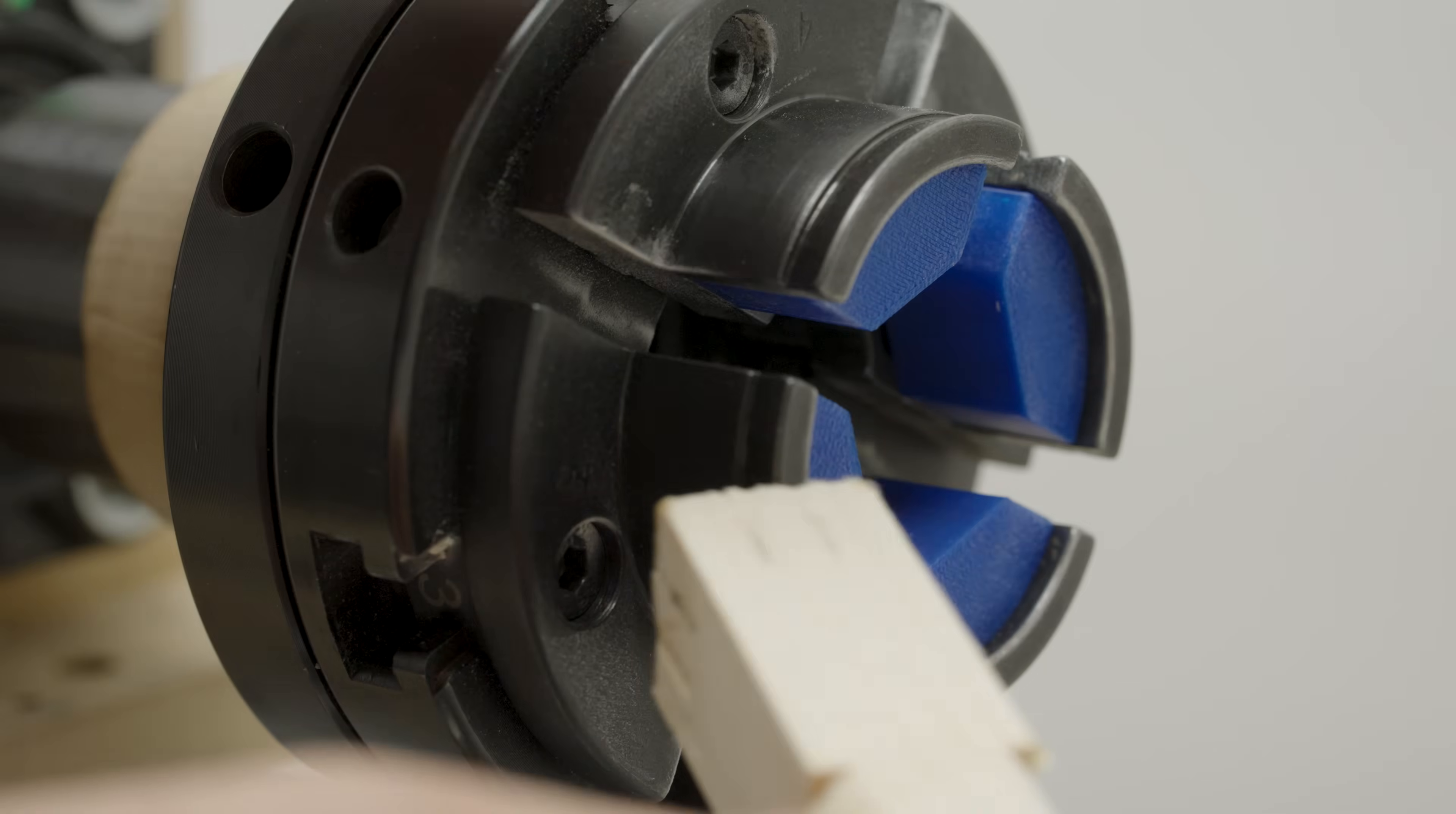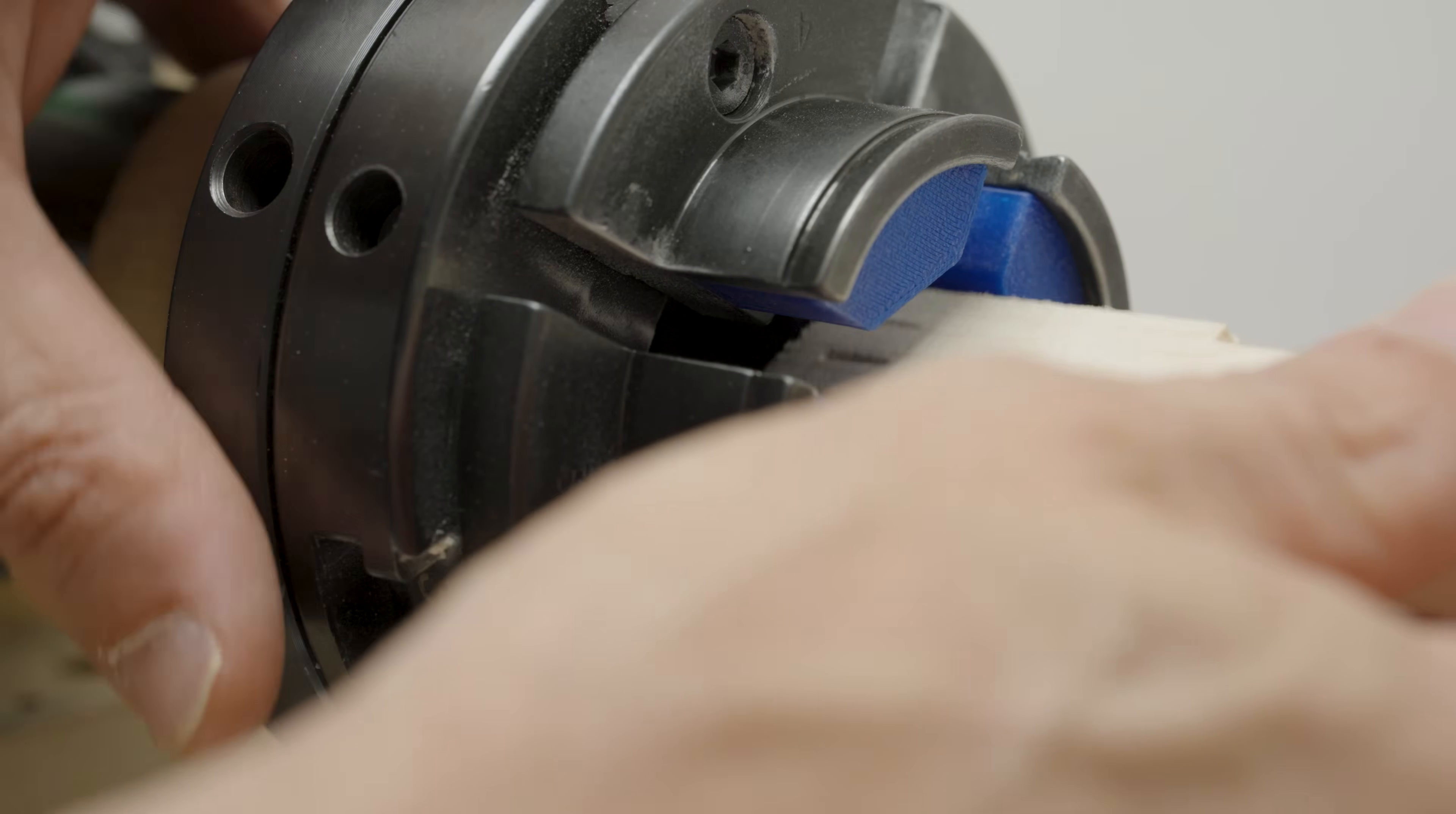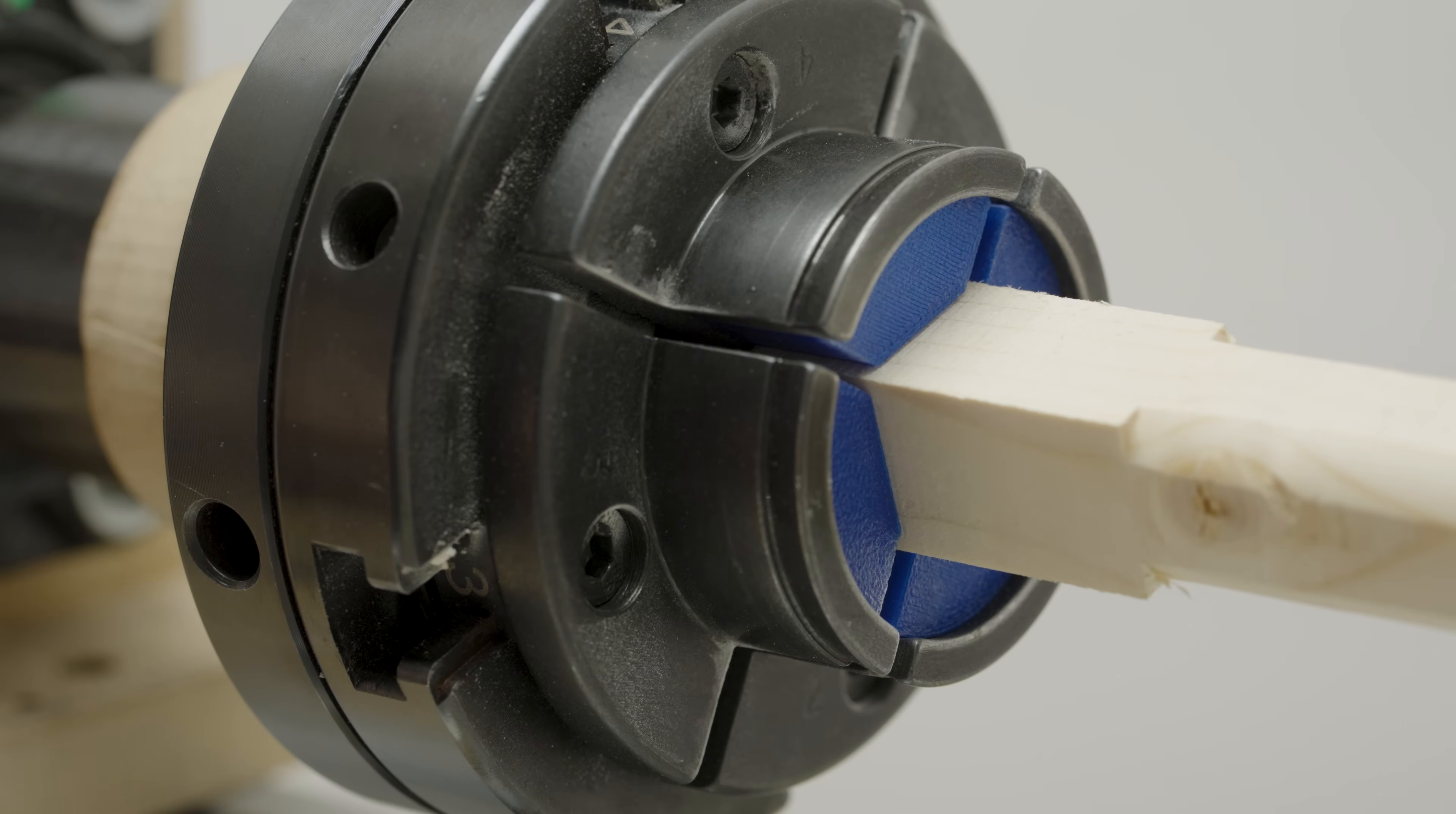I had to clamp square stock. So I 3D printed these chuck jaw attachments that make it much easier to clamp a piece of square stock that's very small.